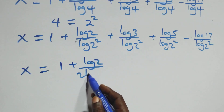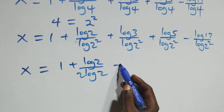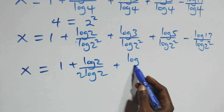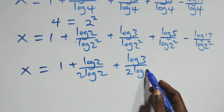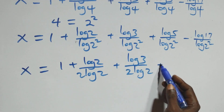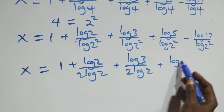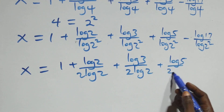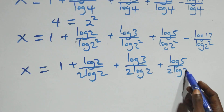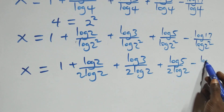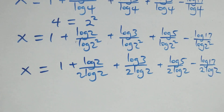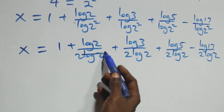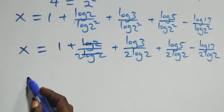Continuing: plus log 3 over 2·log 2, plus log 5 over 2·log 2, minus log 17 over 2·log 2.